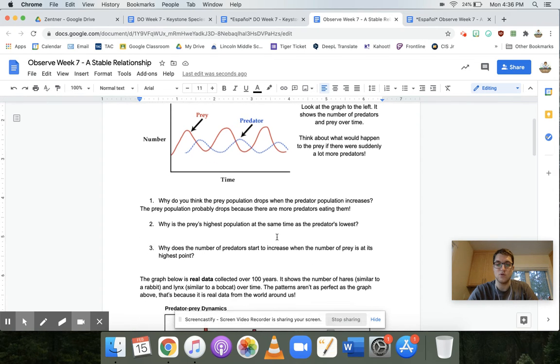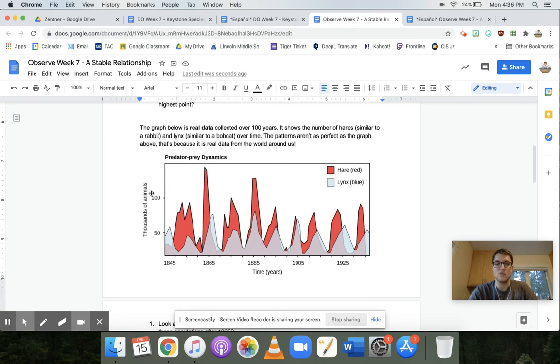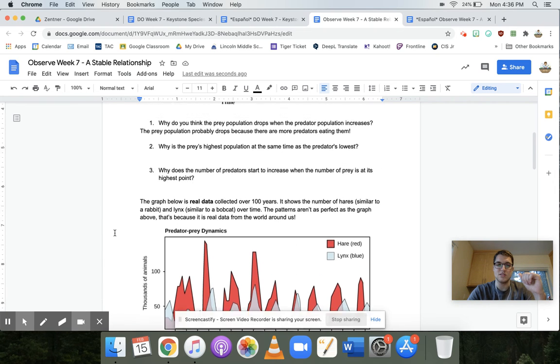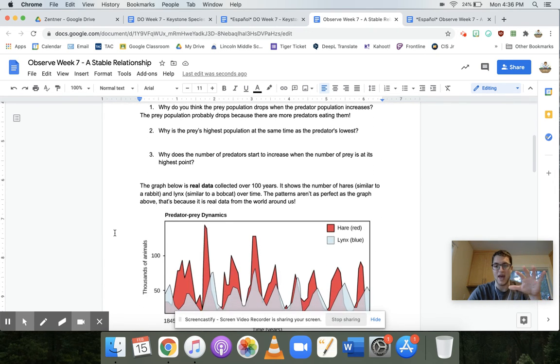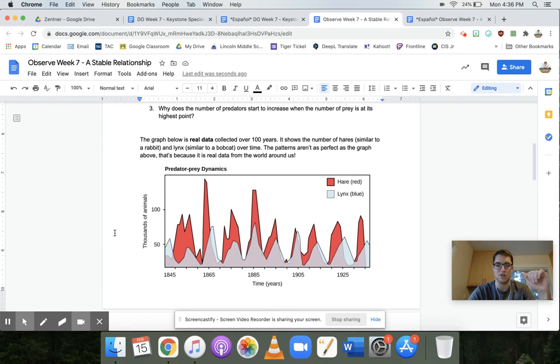So we can go through these next few questions, and then we get to the real exciting part, which is right here. This is real data collected over 100 years. So it's kind of a famous case of this predator-prey relationship. A lynx, which is kind of like a bobcat, and a hare, which is like a rabbit. And you can see that there's a similar pattern to the graph we're looking at above, but it's a little bit more jagged because it's real data. Real data isn't quite as perfect and smooth as other things.